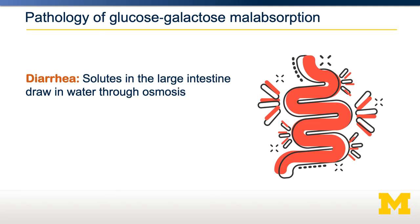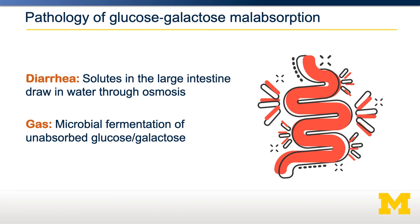If you do not have activity of SGLT1, that glucose and galactose will stay in the lumen and traffic into the large intestine. As solutes appear in the large intestine, they draw in water, resulting in diarrhea. High levels of diarrhea can result in dehydration due to excretion of water. In patients with glucose-galactose malabsorption, consumption of lactose, or glucose and galactose, can result in life-threatening diarrhea in newborns.